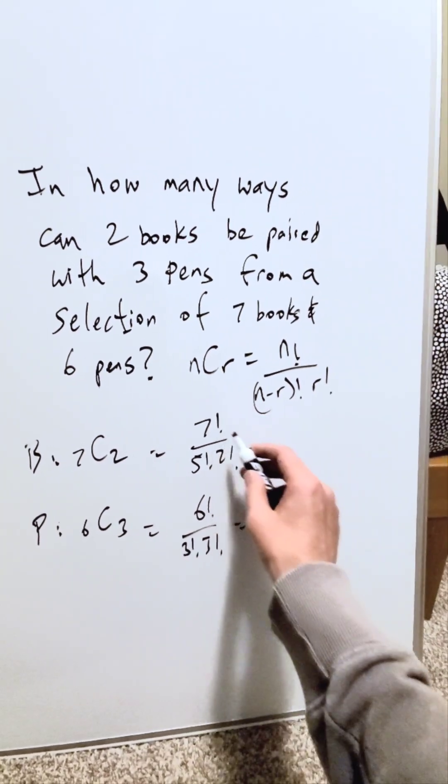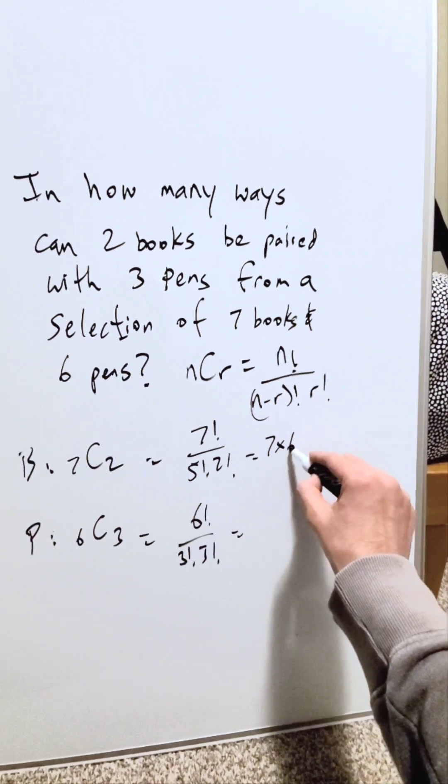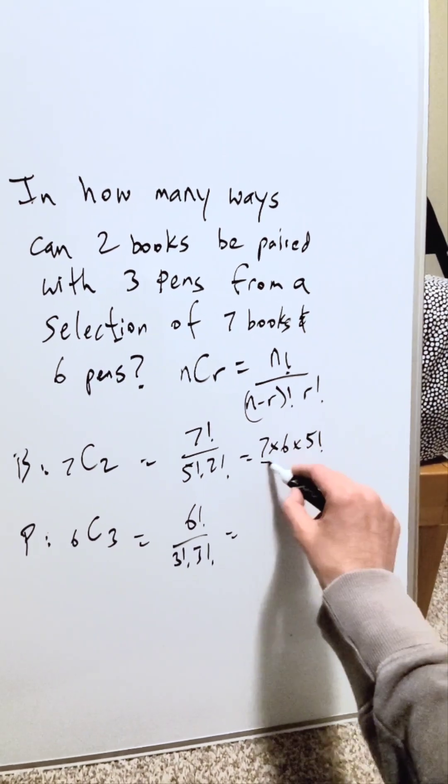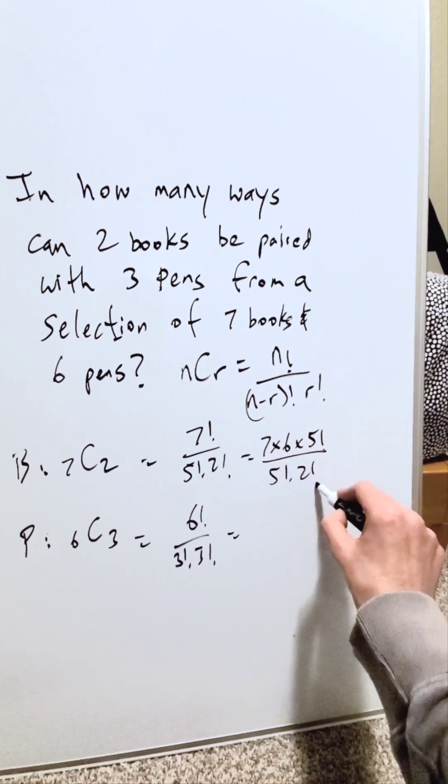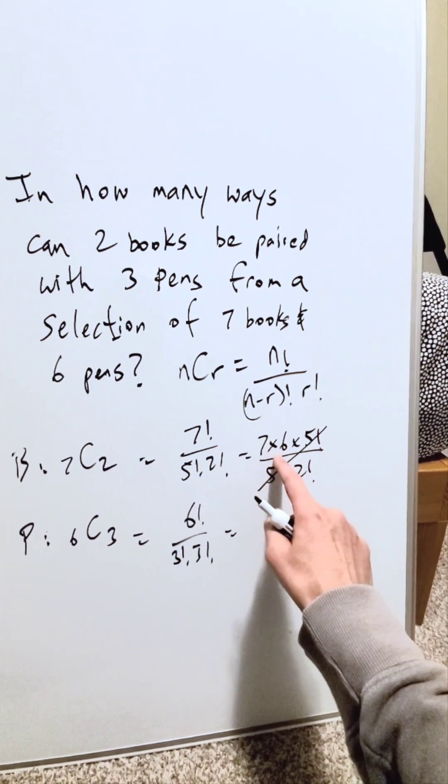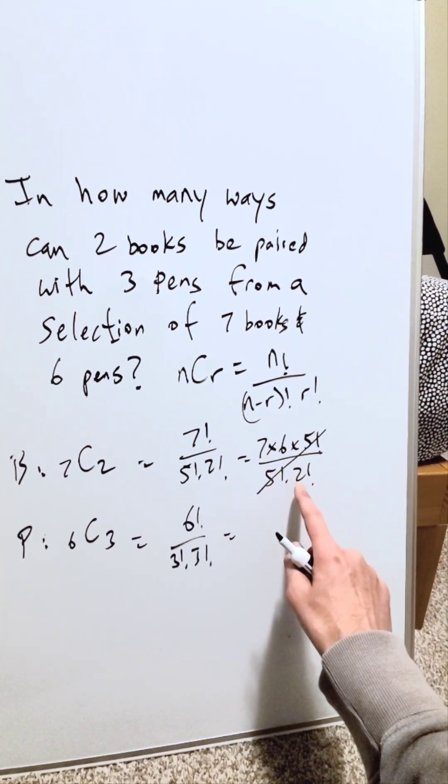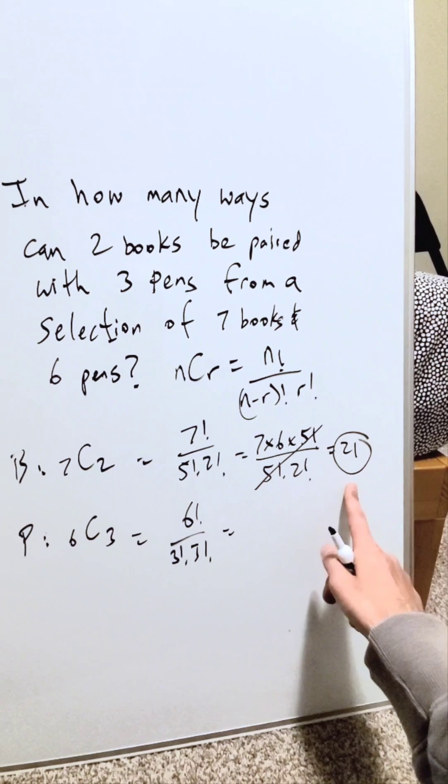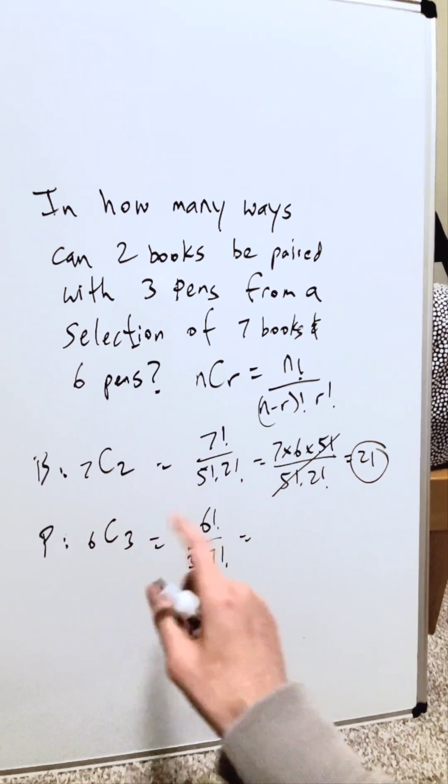Let's compute these. Seven factorial, just write that seven times six times everything else, which is five factorial, divided by five factorial times two factorial. These cancel out. I have seven times six is 42 divided by two, 21. There's 21 ways with regards to your books.